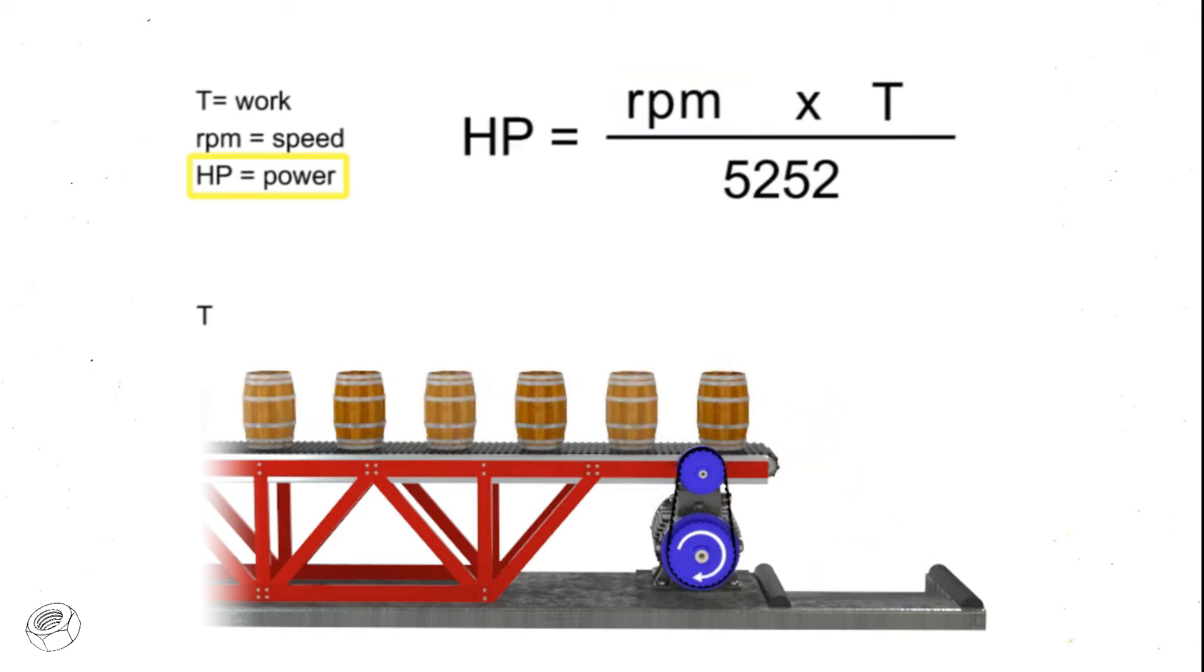If horsepower remains constant, then speed and torque are inversely proportional. As the torque increases, speed decreases to maintain constant horsepower. As torque decreases, speed must increase to maintain constant horsepower.